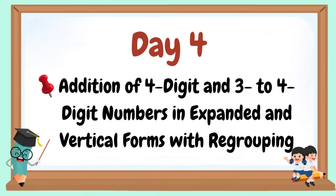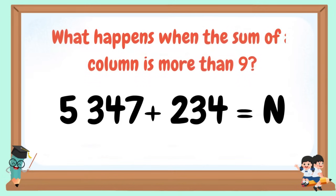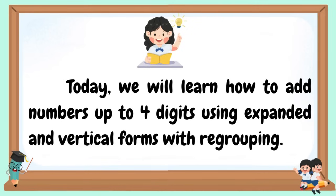Welcome to our Day 4: Addition of 4-digit numbers in expanded and vertical forms with regrouping. Can we add these numbers easily? What happens when the sum of a column is more than 9? Today we will learn how to add numbers up to four digits using expanded and vertical forms with regrouping.